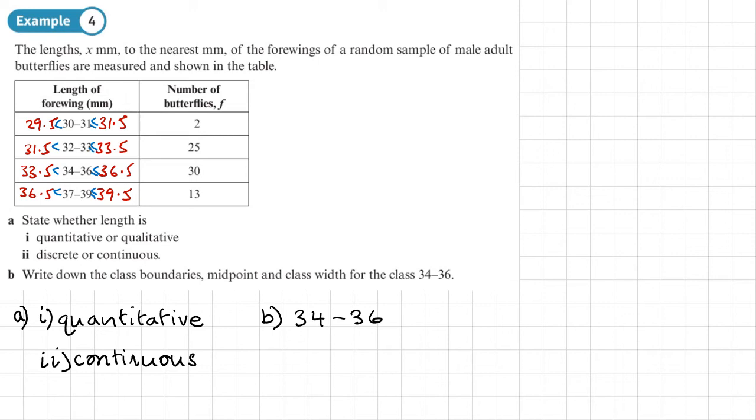But the group that goes 34 to 36, its class boundaries, let's write them down here. Class boundaries are actually here, 33.5 and 36.5. So 33.5 millimeters lower class boundary and upper class boundary 36.5 millimeters.